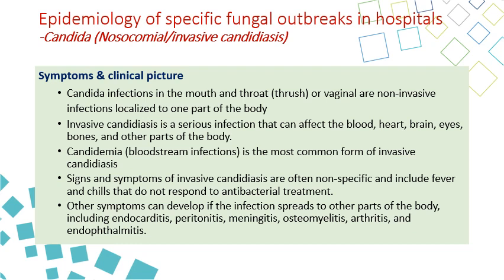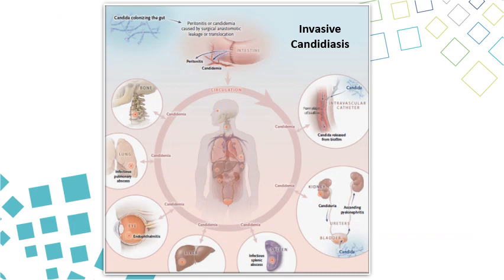It can cause multiple infections at different body sites, including endocarditis, peritonitis, meningitis, osteomyelitis, arthritis, and endophthalmitis. It can affect almost all body organs including the kidney, liver, eye, lung, and bone. The major manifestation is blood infection, which is called Candidemia.